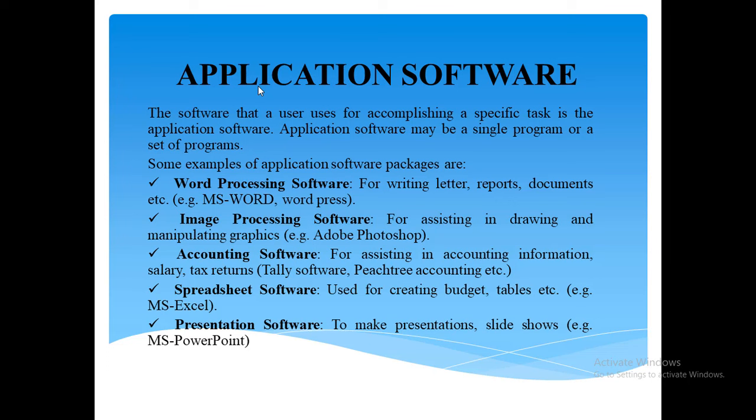Application software is written for different kinds of applications, such as graphics, word processors, media players, database applications, telecommunication, accounting purposes, and social media platforms like Facebook. Different types of application software include word processors, image processing software, accounting software, spreadsheet software, and presentation software.